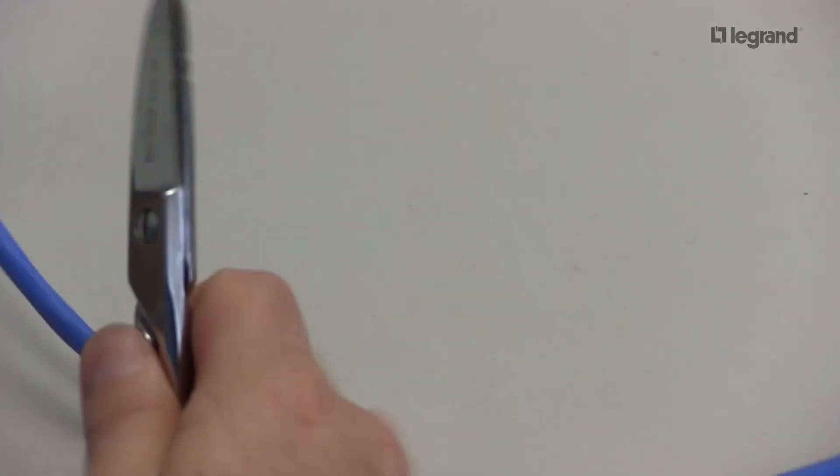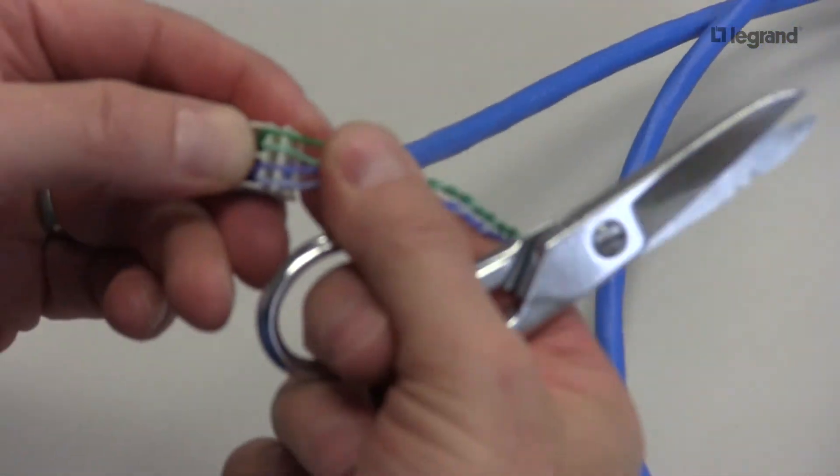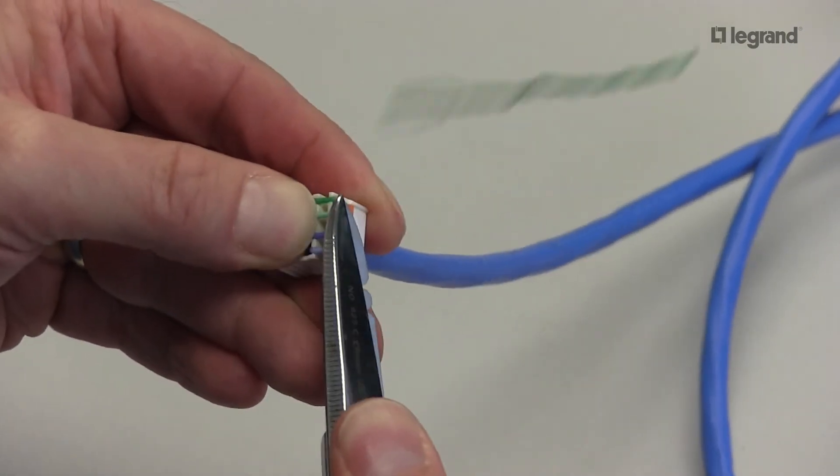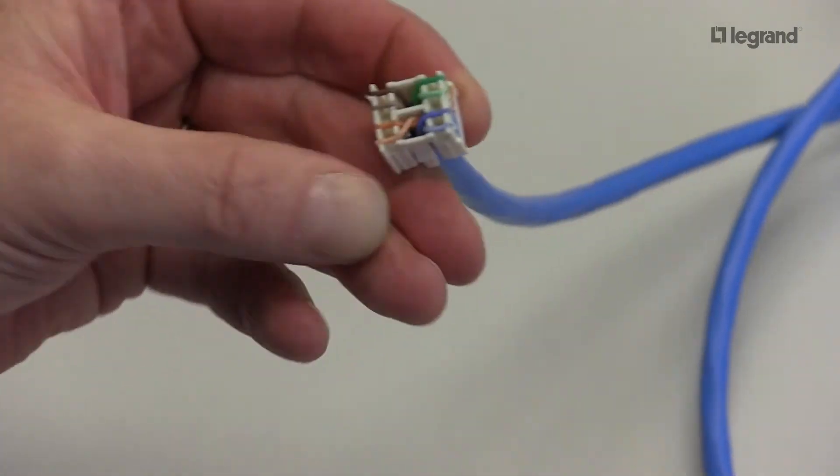And if I use my scissors, you have to keep in mind the same thing. You do not bend the conductors over the side. Nice and flush to the edge of the cap. Just like that.